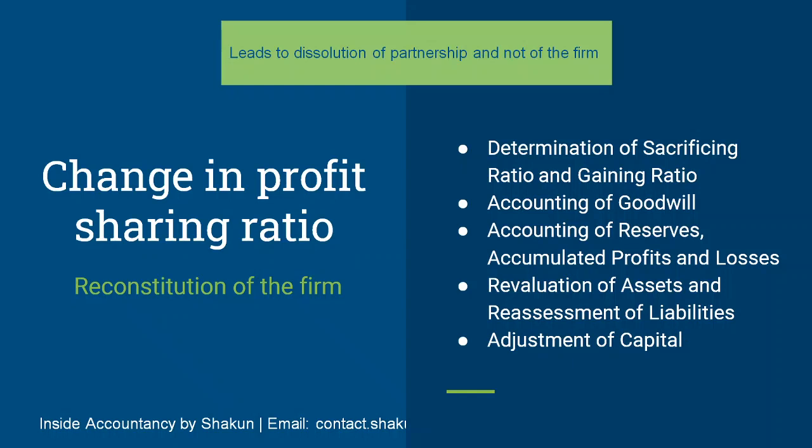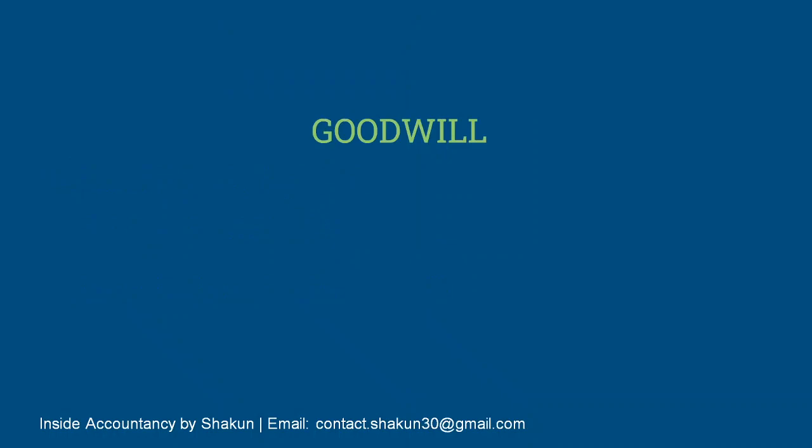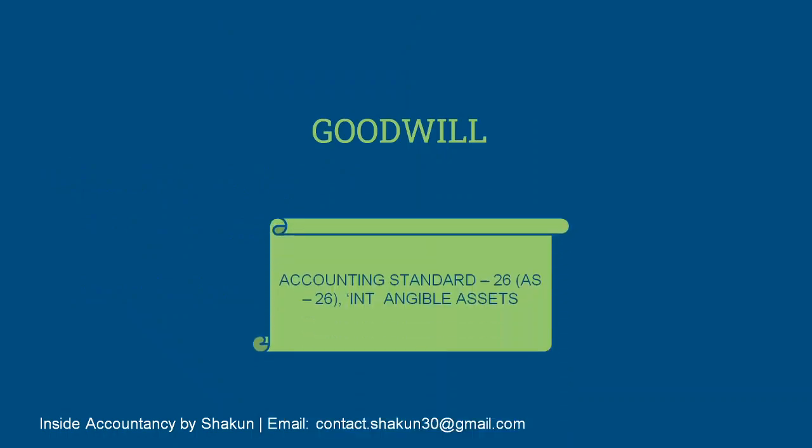I have already talked about the first issue — determination of sacrificing ratio and gaining ratio — in a previous video. Now I will be talking about the treatment of goodwill. Let us first throw a light on what goodwill means. According to Accounting Standard 26, that is AS 26, which covers Intangible Assets —